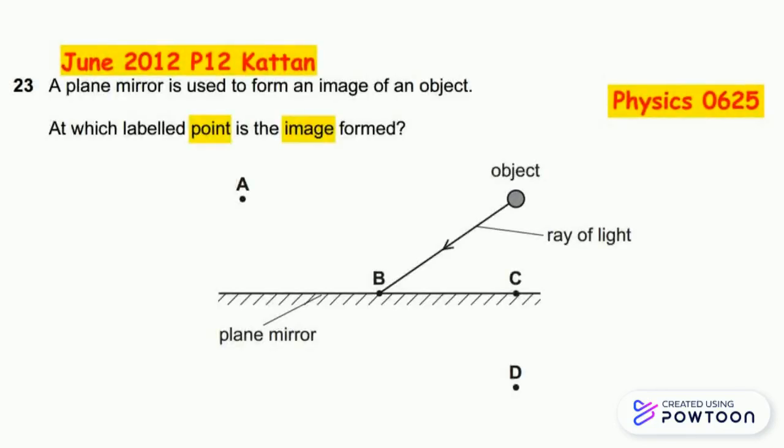As you can see, the ray is coming from the object, striking the plane mirror at point B. We name it as the incident ray.